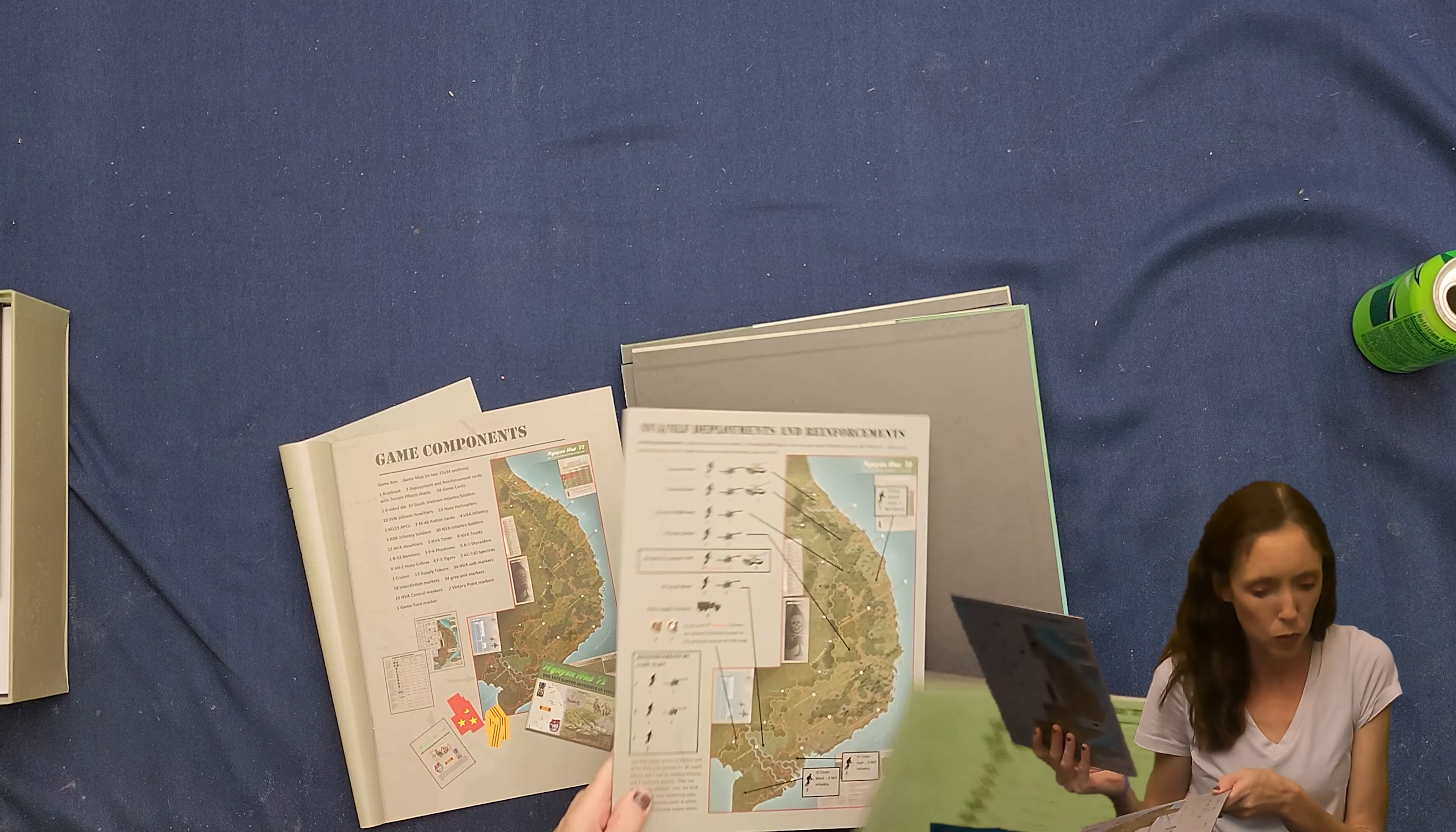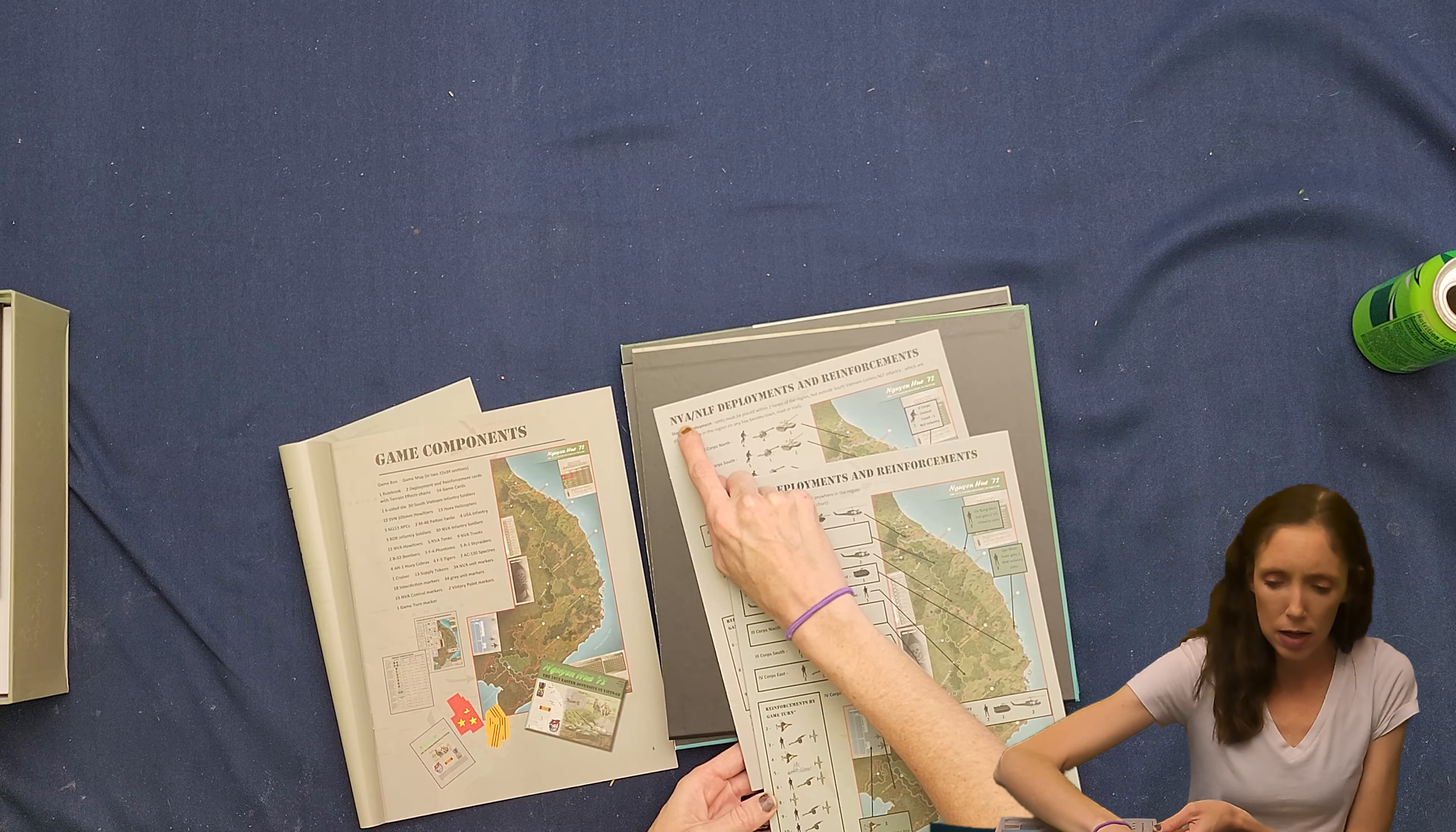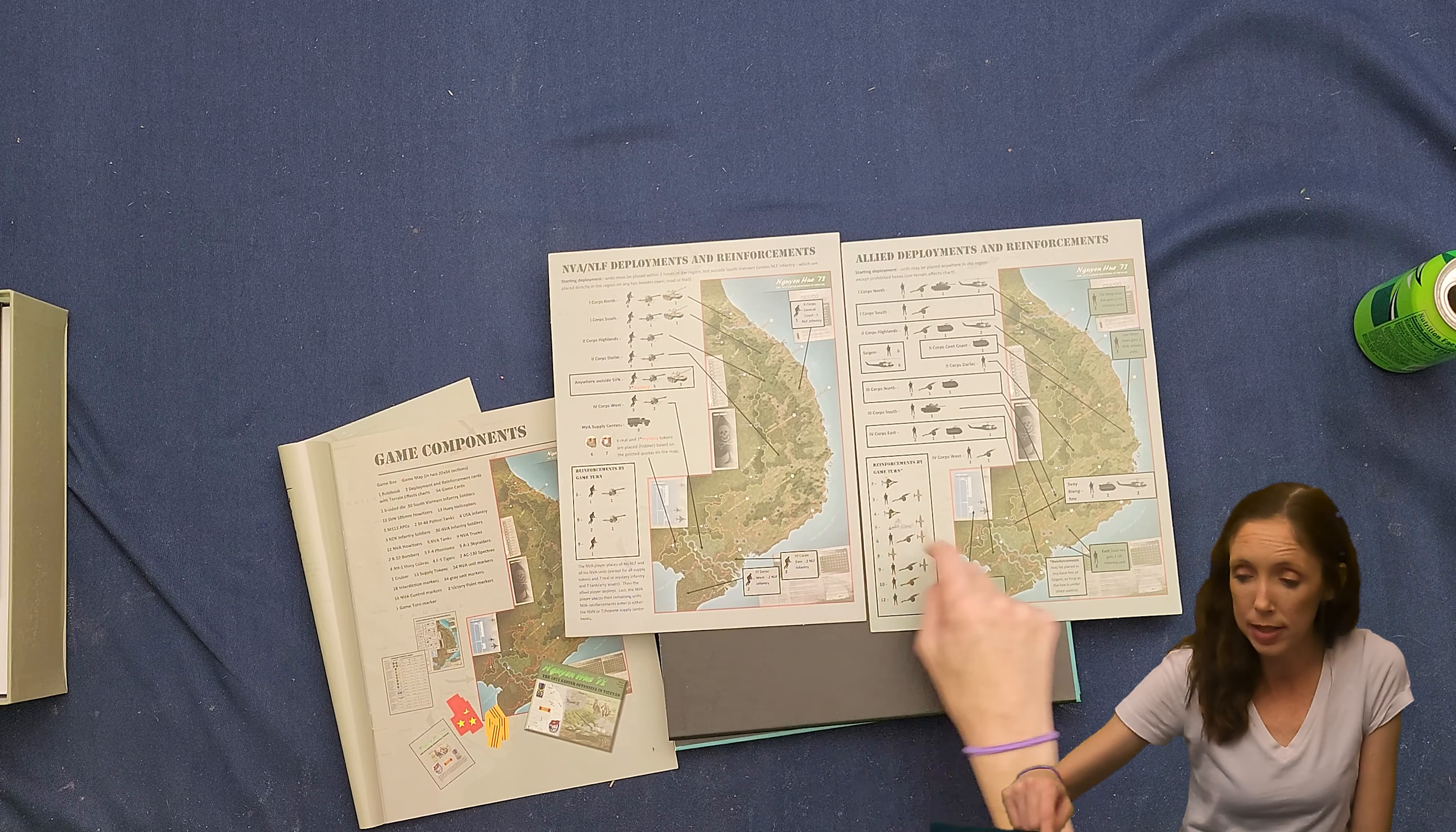we have these, which are deployment and reinforcement cards, because those are here, NVA and NLF deployment and reinforcements, allied deployments and reinforcements. So that's North Viet something and North something, something. Don't know. Don't know. Don't know. Couldn't tell you, but that's what that is. So there is that or those.